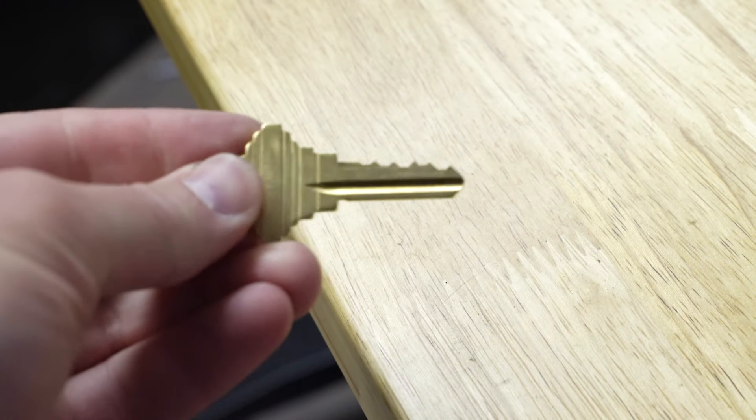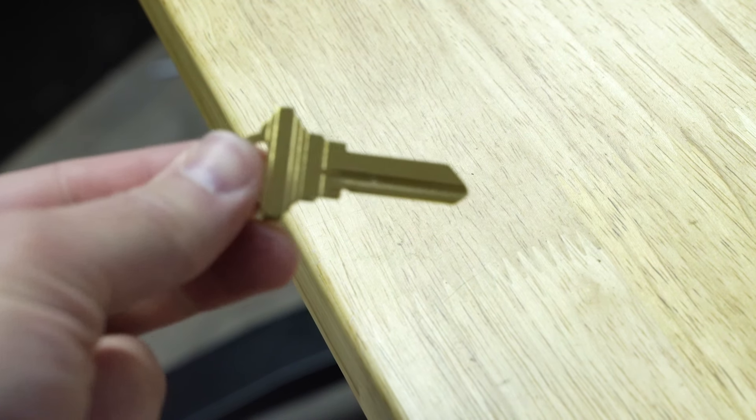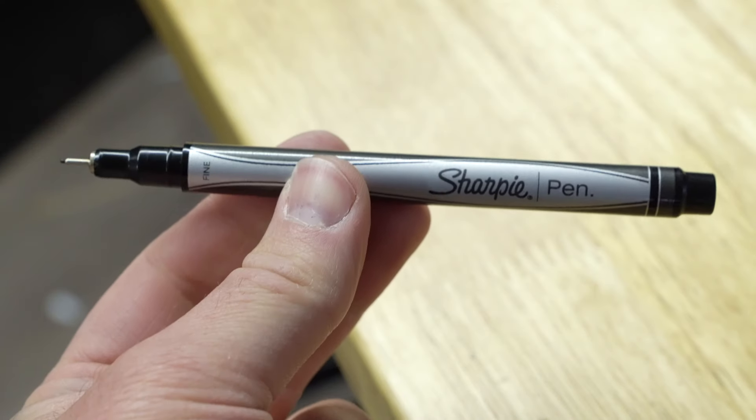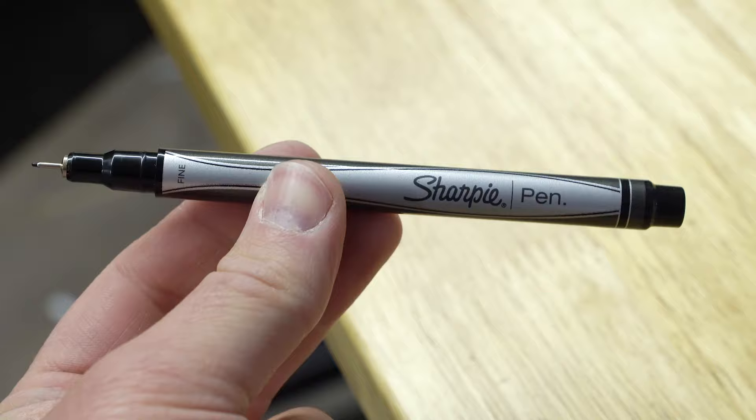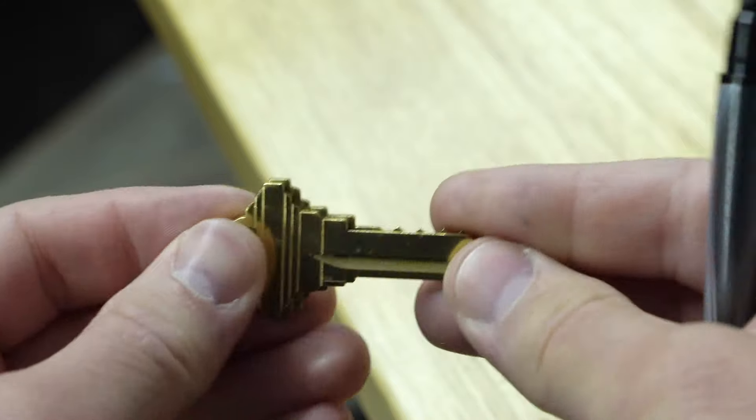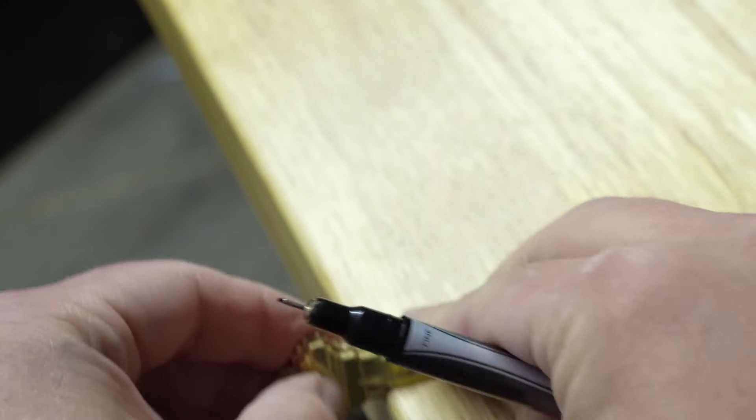I have the key that I want to duplicate right here. I grabbed a blank key and then I'm going to be using this Sharpie fine point marker. Let me zoom it in so you can see. Now, what I'm going to do is take the blank key and the key I want to duplicate and put it down here. I'm going to line it up on the shoulder and hold it just like that.